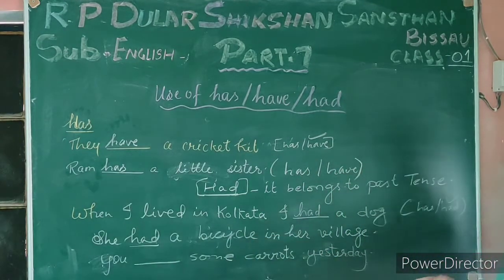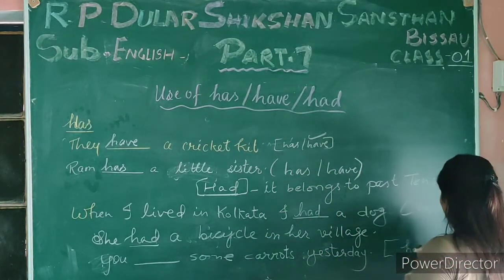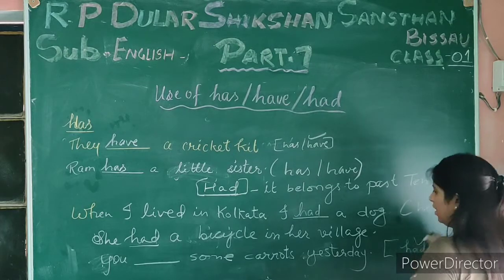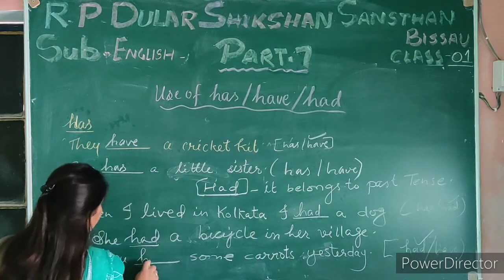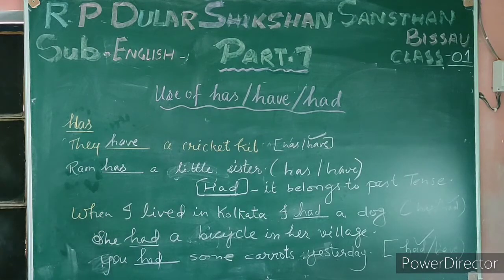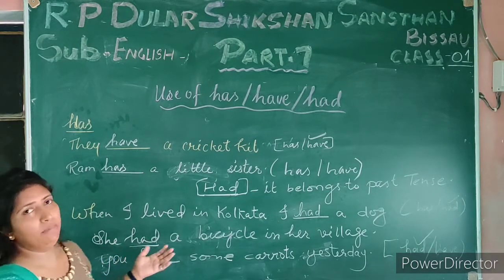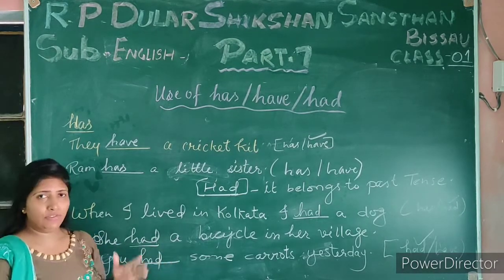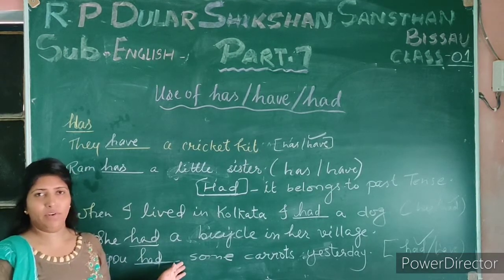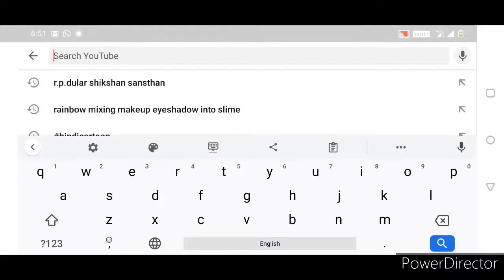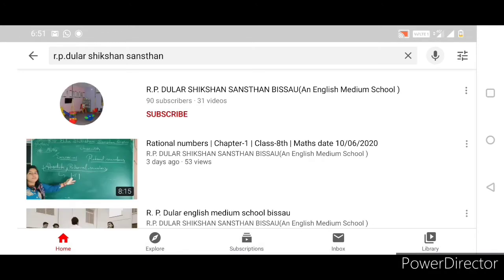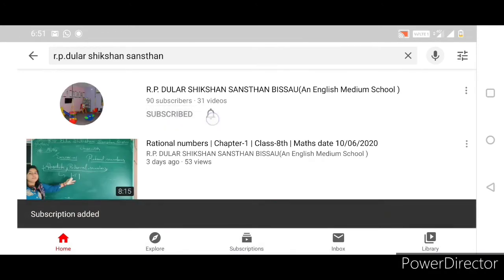So kids, that's all for today. This is your has, have, and had lesson. I will give you homework in the form of a PDF according to this topic. For more updates, search on YouTube: RP Dular Sikshan Sahin. Please subscribe to the channel and press the bell icon. Thanks for watching. Bye.